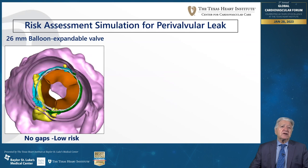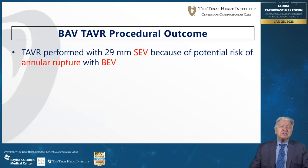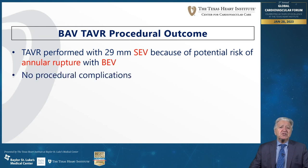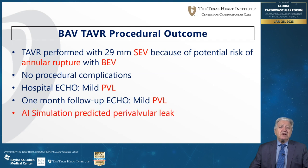Paravalvular leak is one of the important potential risks. For the balloon-expandable valve the simulated risk was very low; however, with the self-expandable valve the risk of perivalvular leak was significantly higher. Based on the AI analysis, we elected to place a self-expandable valve because of the potential risk of annular rupture. There were no procedural complications, and hospital echo showed mild perivalvular leak, which persisted at one-month follow-up — accurately predicted by the AI DASI simulation.